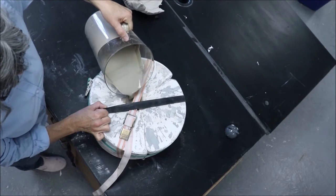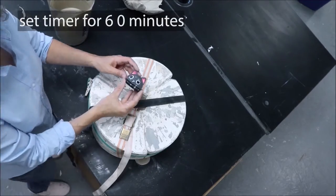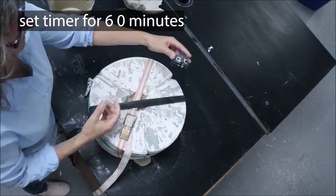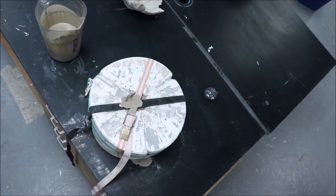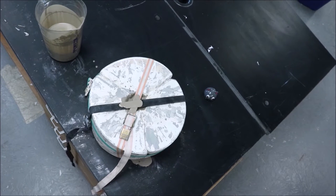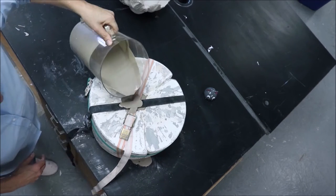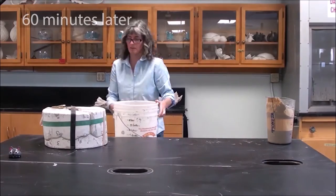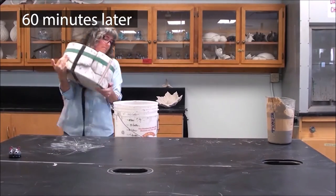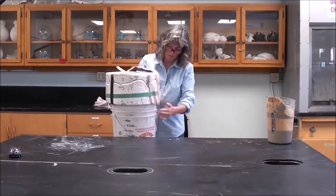Again, the process is the same. I pour the slip in, and for this mold I leave the slip in for about an hour. Since the slip remains in this mold for such a long time, I have to keep topping off the mold with more slip as the mold continues to suck out the water. I then pour out the excess slip, allow the slip inside the mold to set up for several hours, and then open the mold.